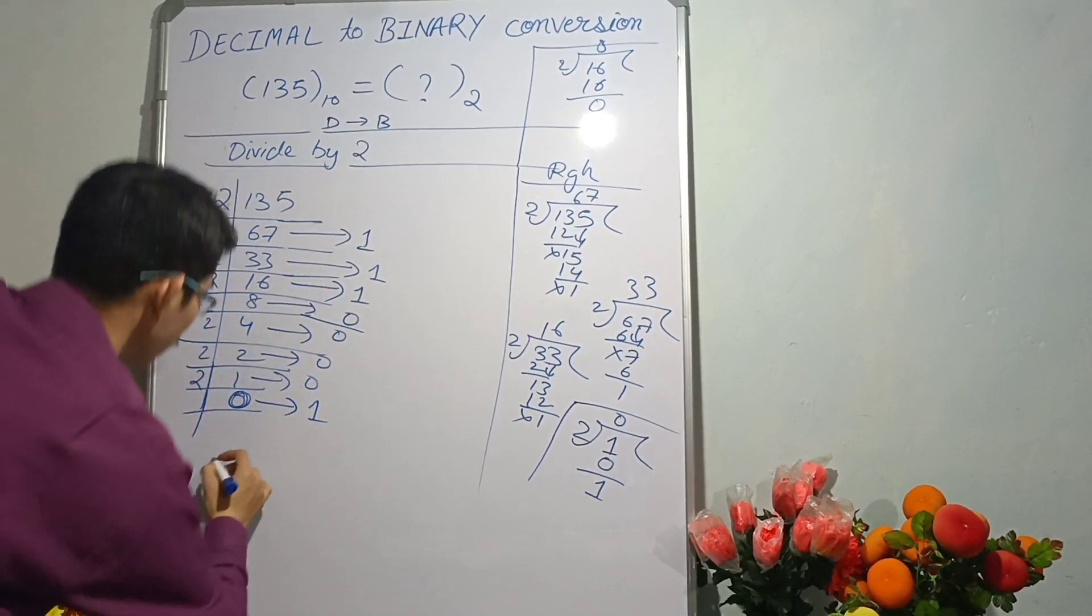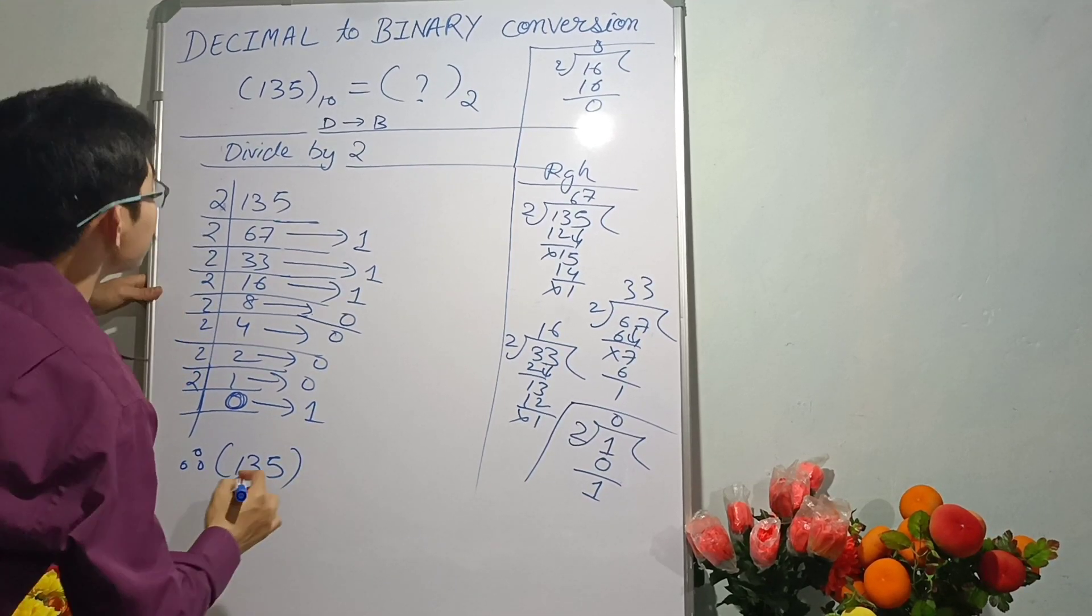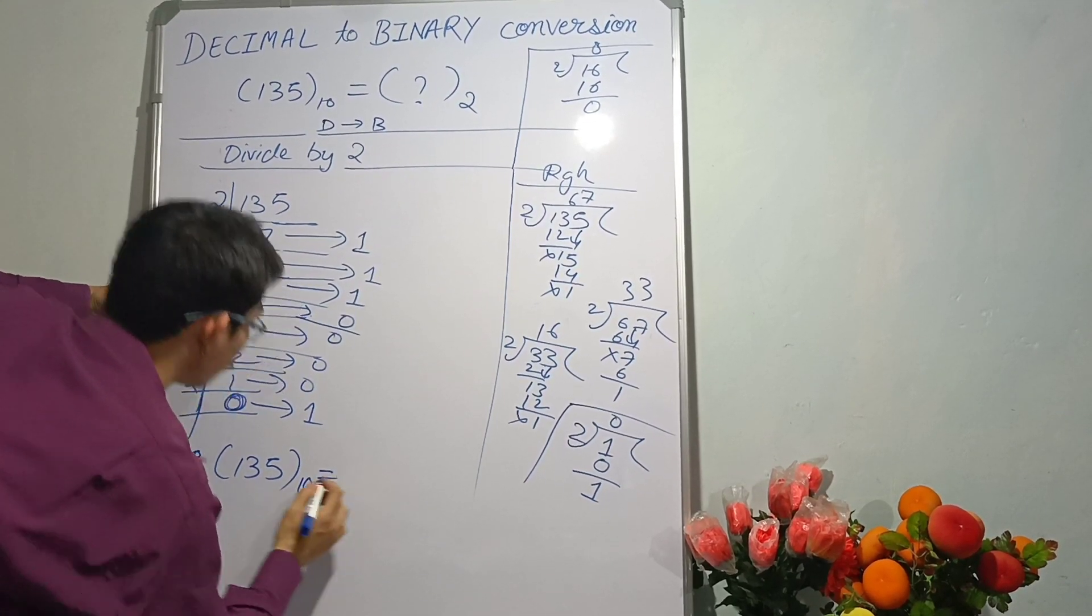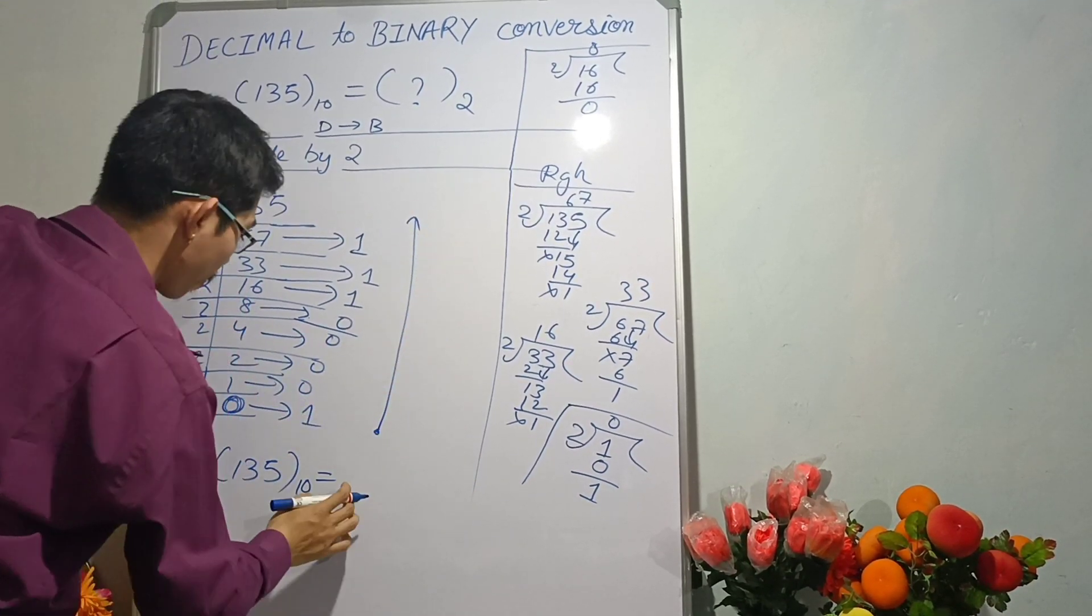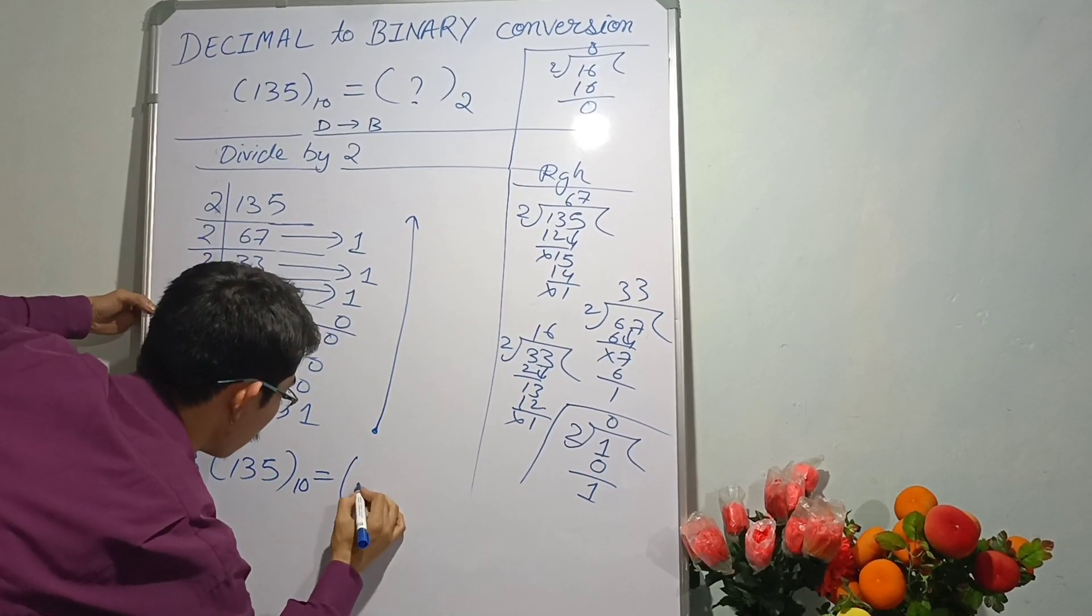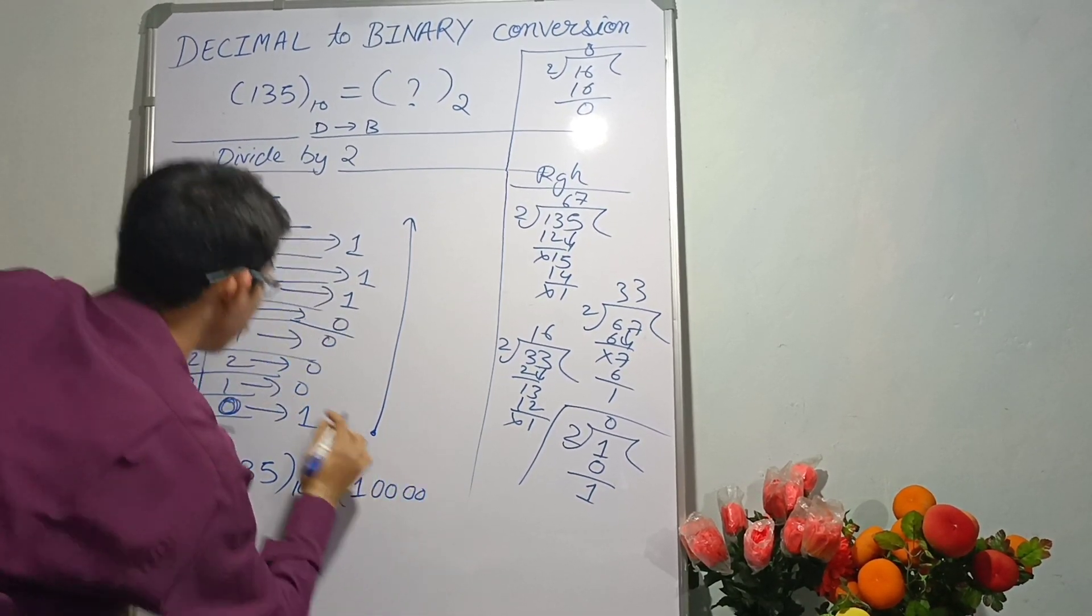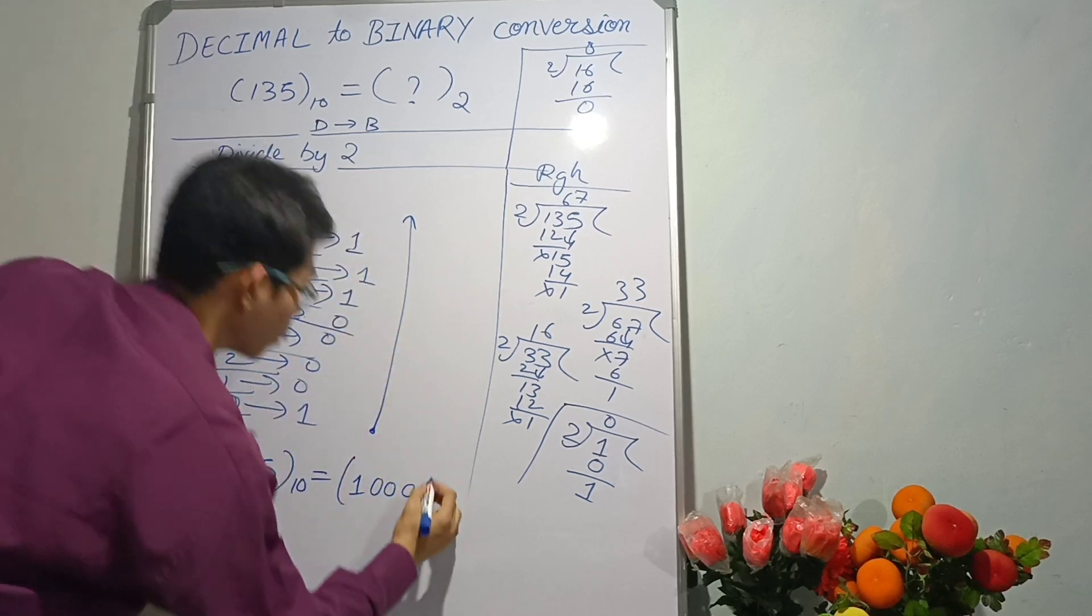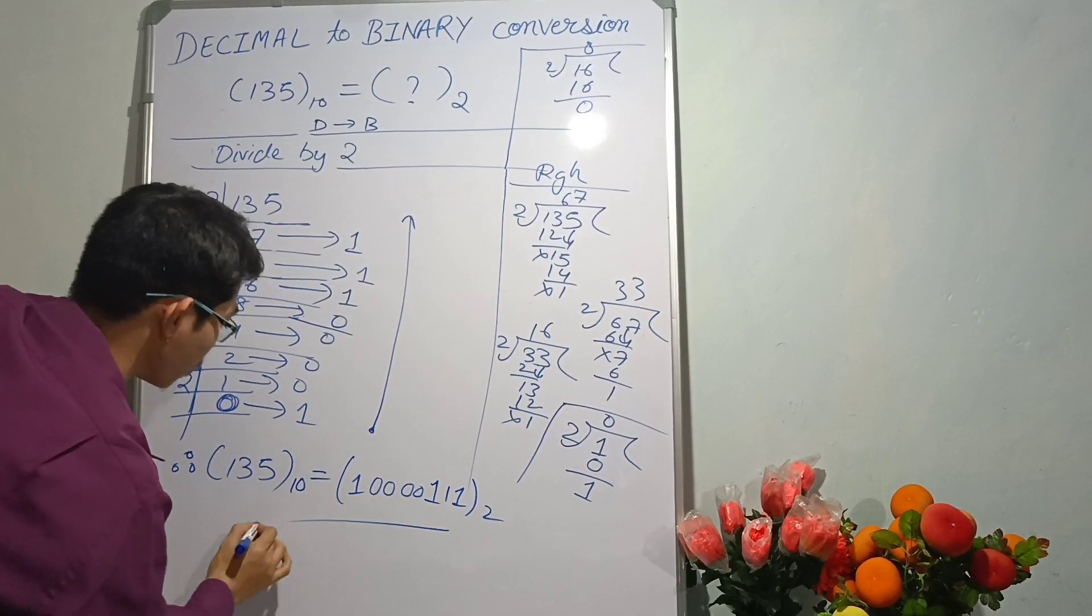Now the answer is 135 to the base 10, this equals to, we're gonna go bottom to top: 10000111 to the base 2. This is your answer.